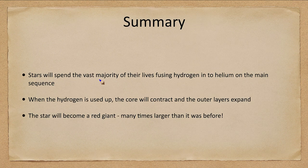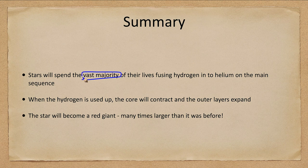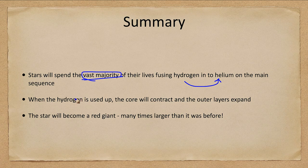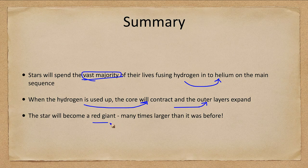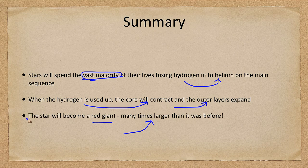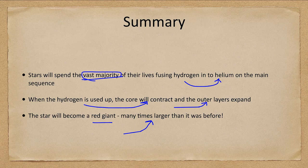Let's go ahead and finish this section with our summary. What we looked at is that stars are going to spend the vast majority of their lives fusing hydrogen into helium on the main sequence. When the hydrogen is used up, the core contracts and the outer layers expand. It becomes a red giant star, many times larger than it was before. And we will continue to look at what the changes are and what goes on within the star coming up in further lectures.